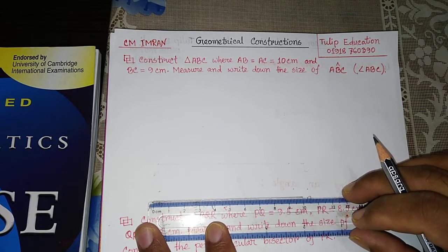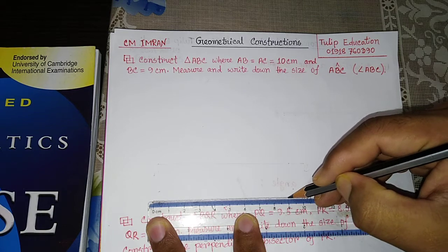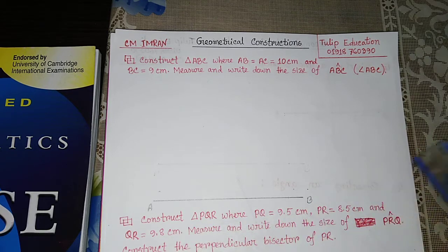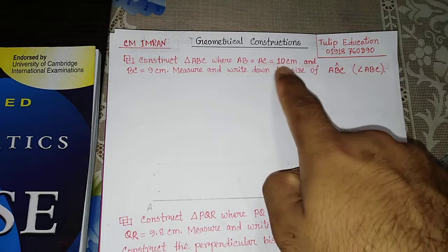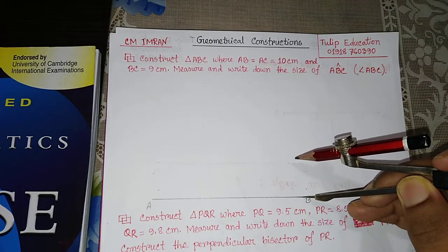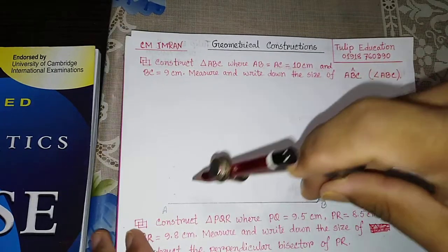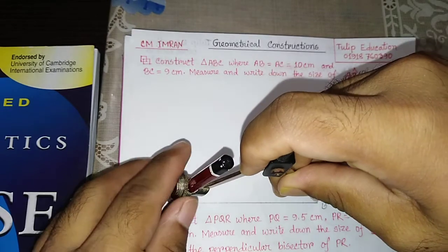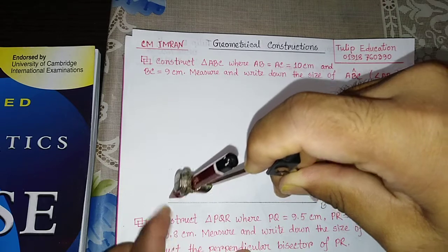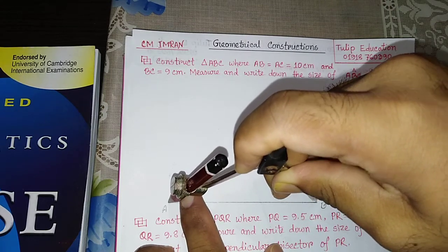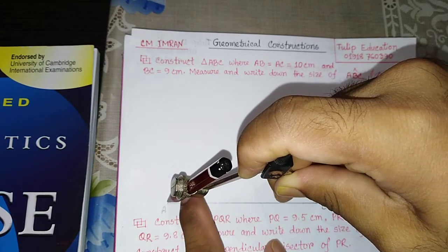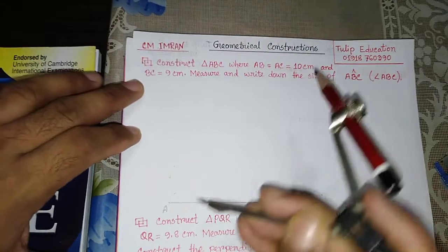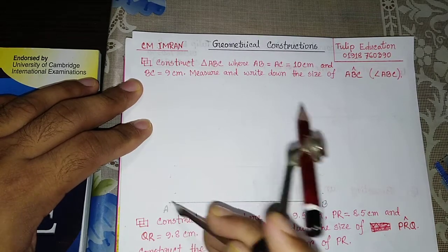We need to use this technique with 9cm, and then we are going to mark point B. We have already said that AB is equal to 10cm, so we need to set 10cm on the pencil compass, because we are going to draw an arc. So the distance is set equal to the required measurement.